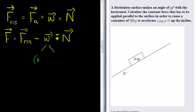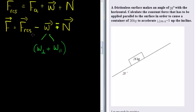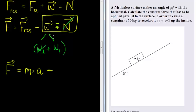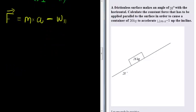Weight can be divided into the component perpendicular to the surface plus the component parallel to the surface. The perpendicular component will cancel with the normal force, so we simply have that the applied force equals the resultant force — which is mass times acceleration — minus the weight component parallel to the surface.